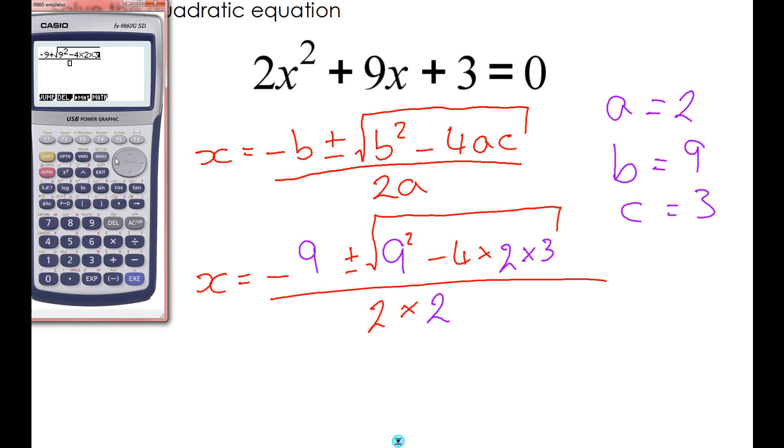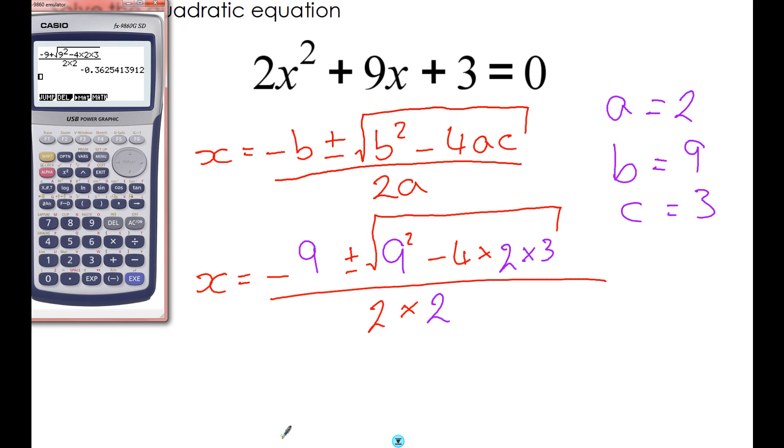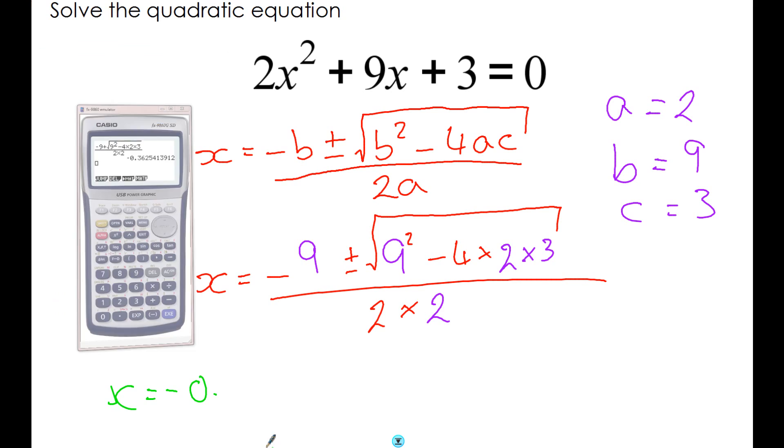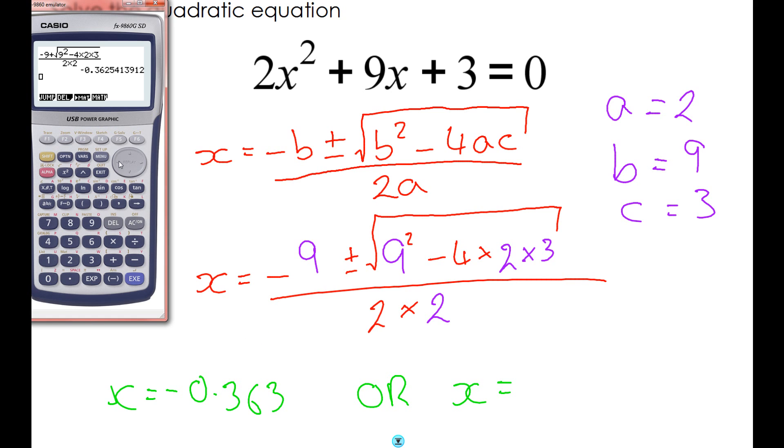Start with minus 9, let's start with the plus: square root of 9² - 4 × 2 × 3, all over 2 × 2. Put that in the calculator and it gives you the answer straight away in decimal form.